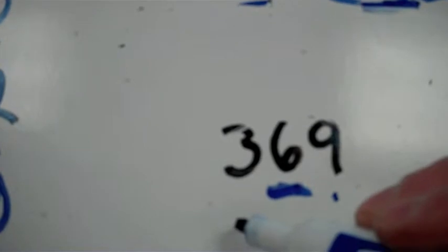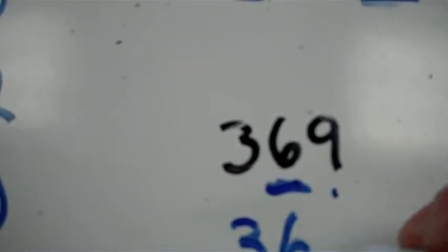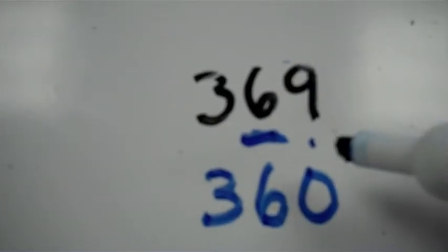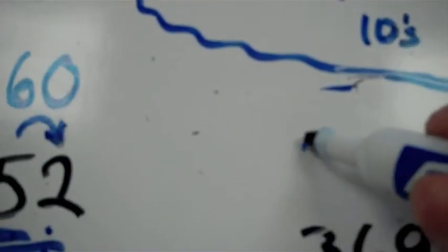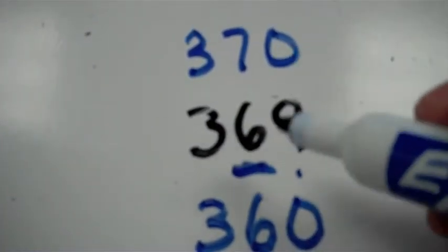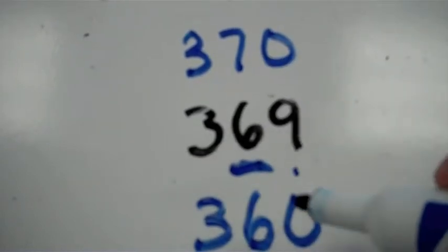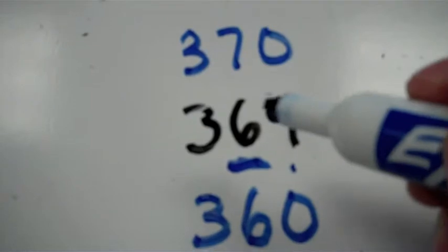The closest tens to 369 is either 300 stays the same, 60, or the next 10 after 60 is 70. Notice that I'm not doing anything with the hundreds because we're only rounding to the nearest tens place. We've got 370 or 360, which is closer.